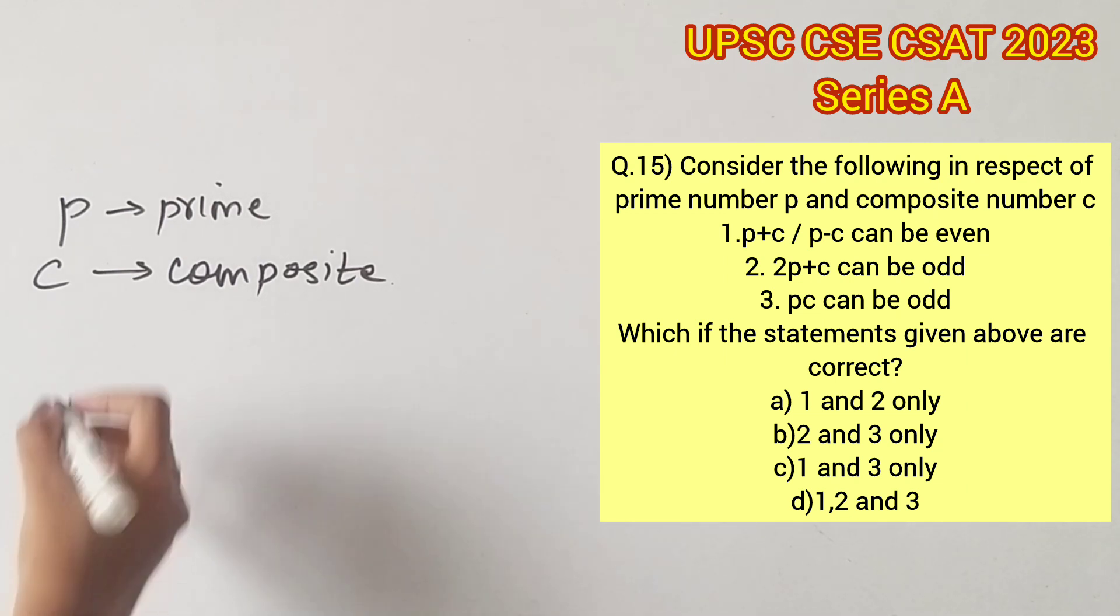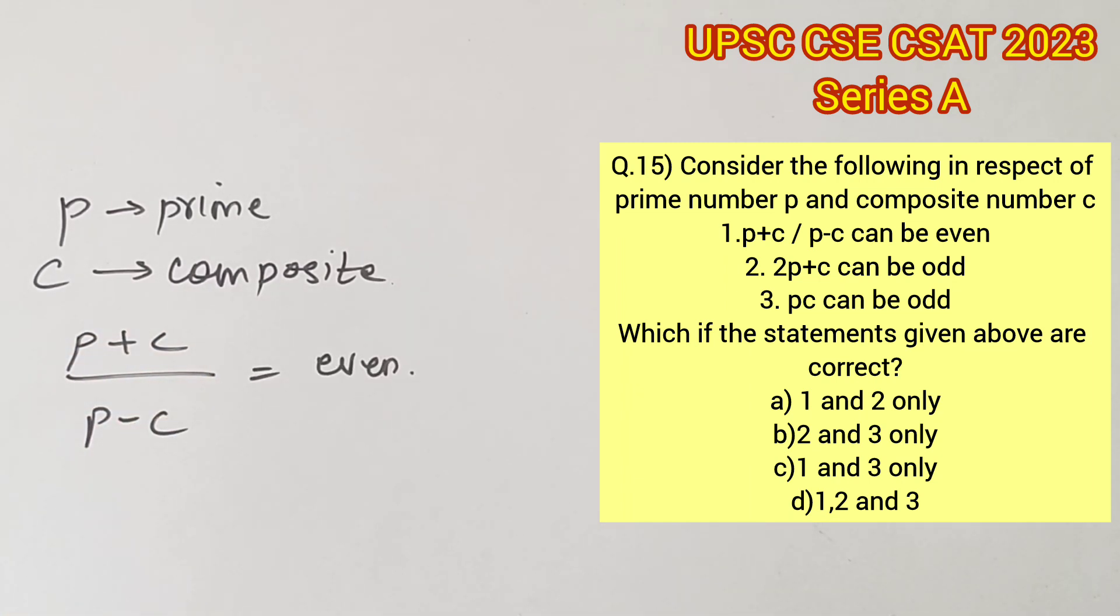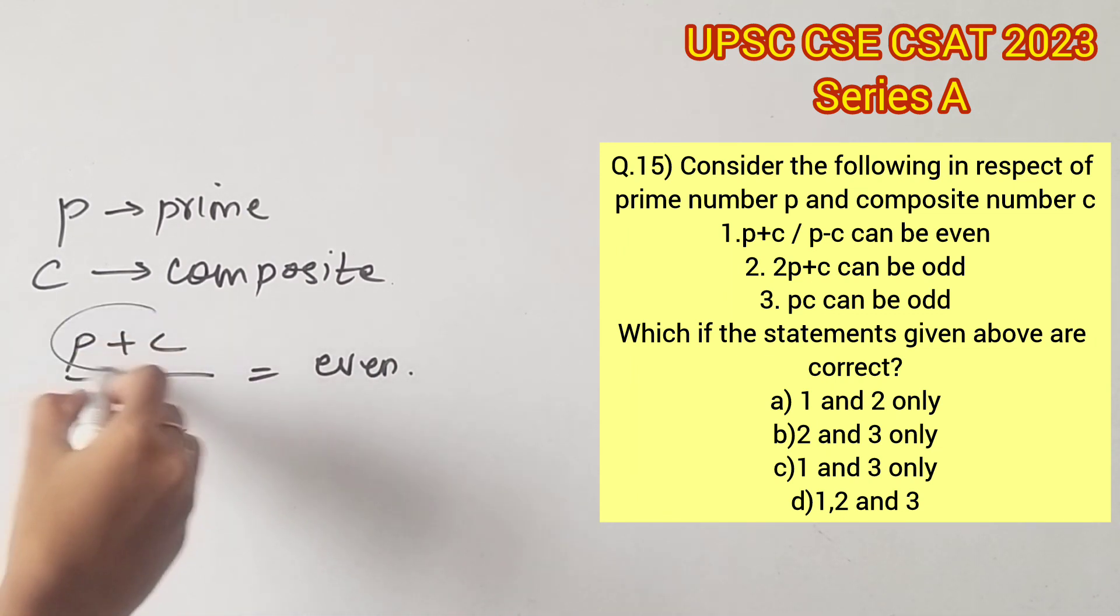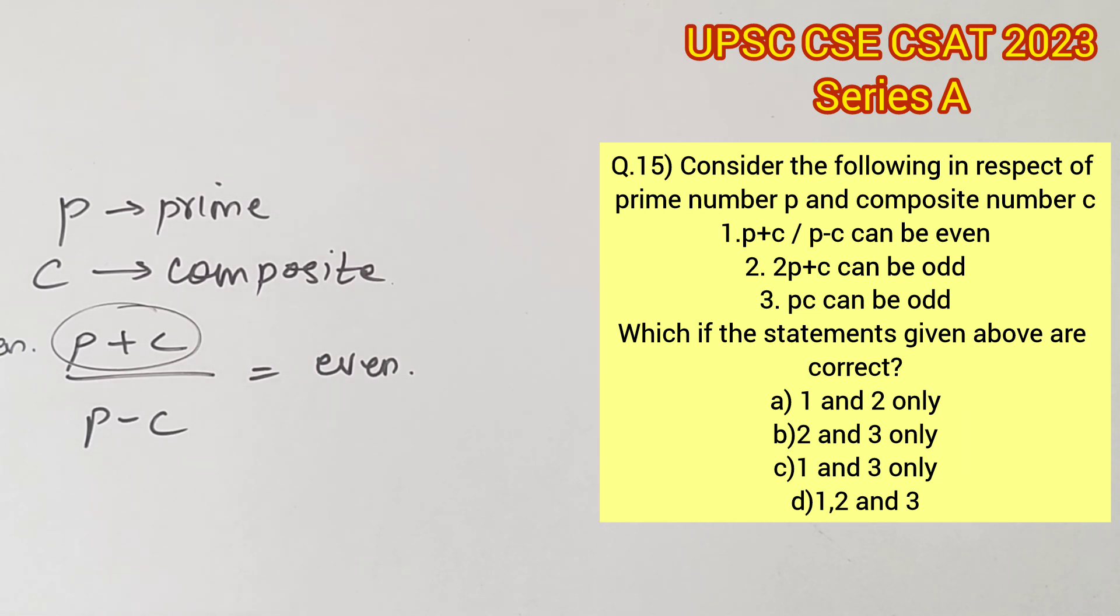The first statement says p plus c divided by p minus c can be even. It is important to notice generic terms like can and might, so it's enough for us to find just one case where this statement is true. We know that an even number divided by an even number will provide a result that is also an even number. So let's try and make the numerator even and the denominator even.